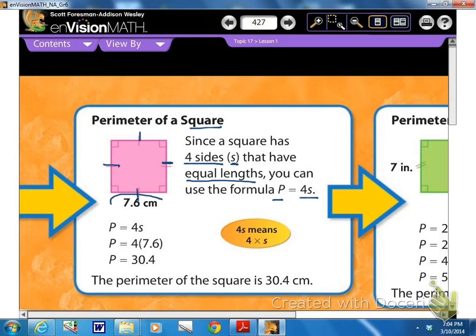So basically, you can just take one side, 7.6, and multiply it by 4, because you have 4 of those, to find the total distance around the figure, or the perimeter. So in this case, since one side is 7.6, they multiply that 7.6 by 4, and they get the perimeter is 30.4 centimeters.